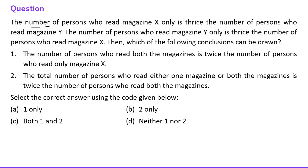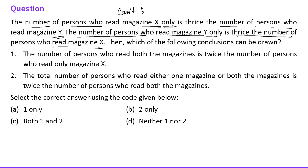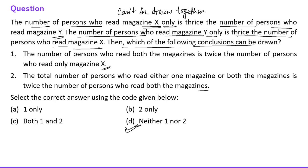Next question: The number of persons who read magazine X only is thrice those who read Y, and the number who read Y only is thrice those who read X. These two statements are contradictory and cannot both be represented in a Venn diagram simultaneously. Therefore no valid conclusion can be drawn from these statements.